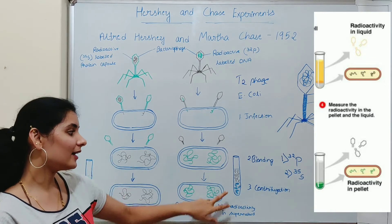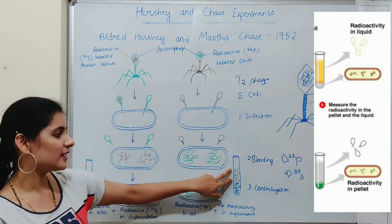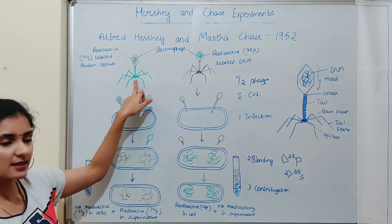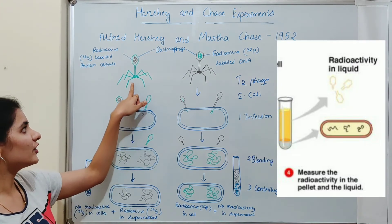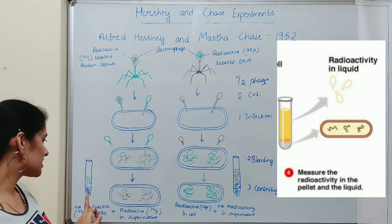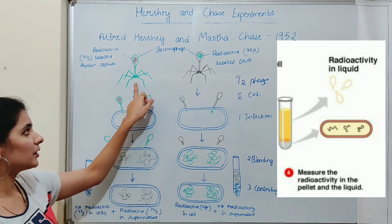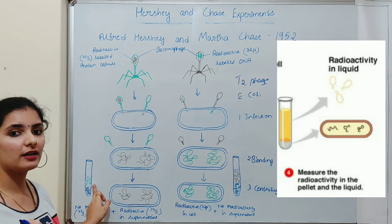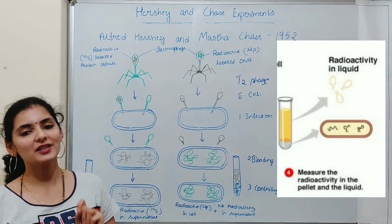As a result of centrifugation, the heavier part — the bacterial cells — settled as a precipitate, while the lighter part — the viral coat — remained as a supernatant. In the first set of experiments, where bacterial cells were infected by virus having radioactive protein, the bacterial cell did not show radioactivity. This suggests that the radioactive protein of the virus did not transfer to the bacterial cell. The radioactivity was seen only in the supernatant, meaning the viral coat with radioactive protein stayed outside — which proves that protein is not the genetic material.